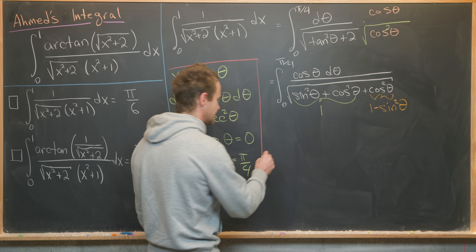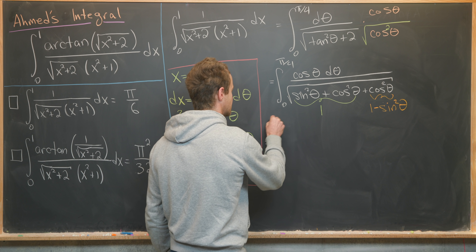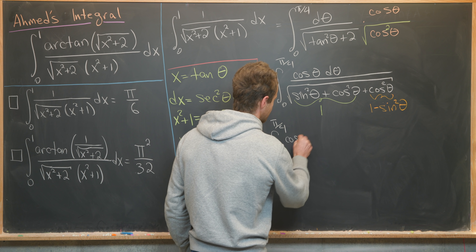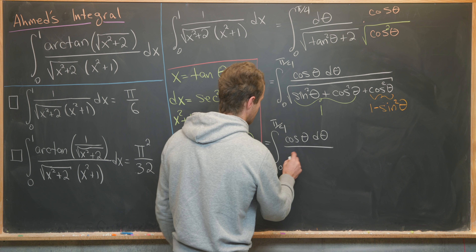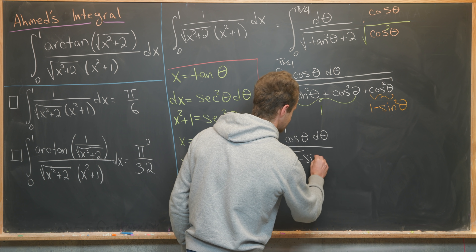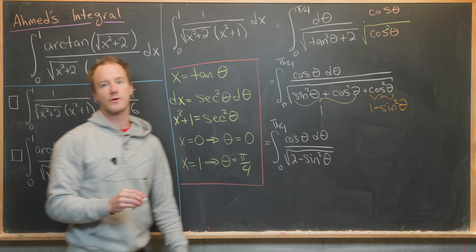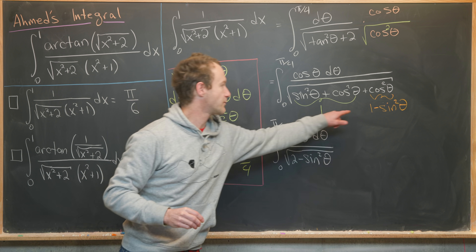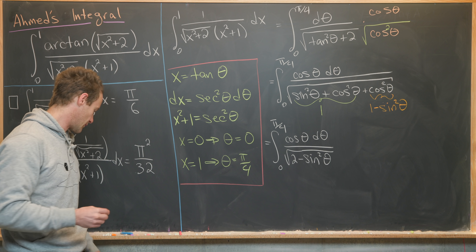That leaves us with the integral from zero to pi over four of cosine theta d theta over the square root of two minus sine squared theta. So we've got one plus one minus sine squared theta — that's why that works.